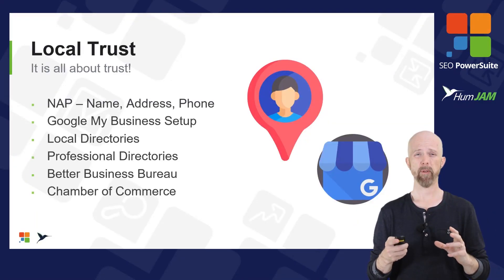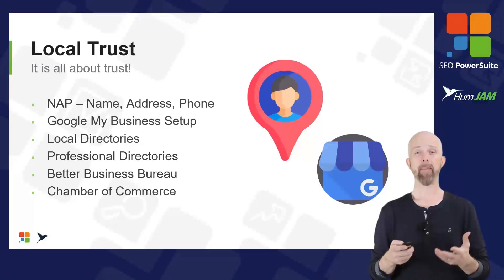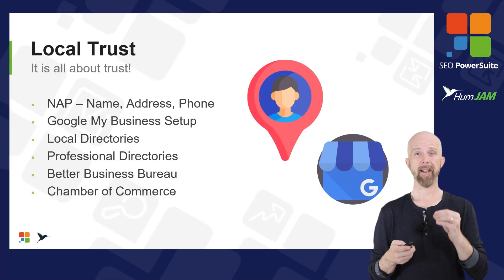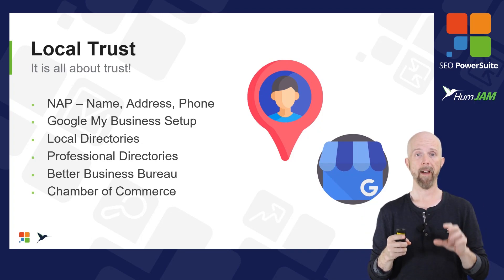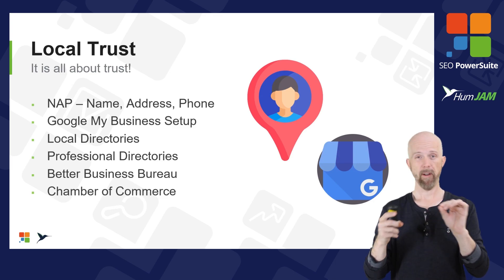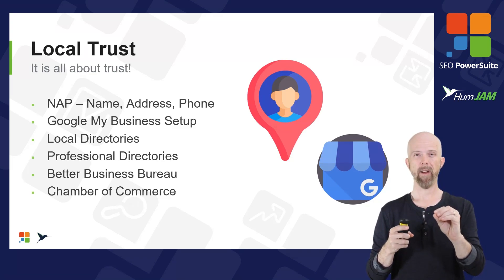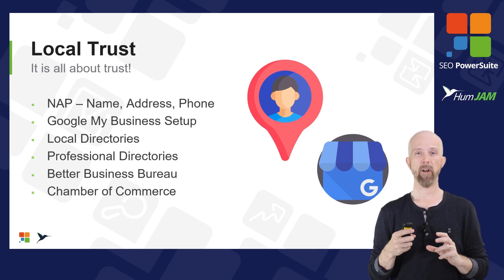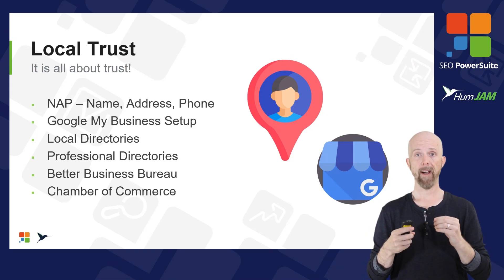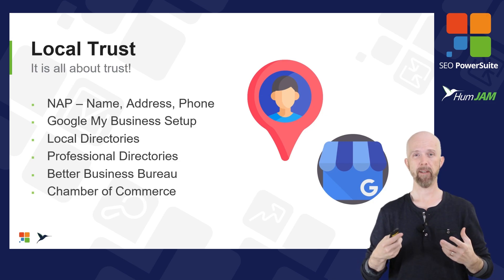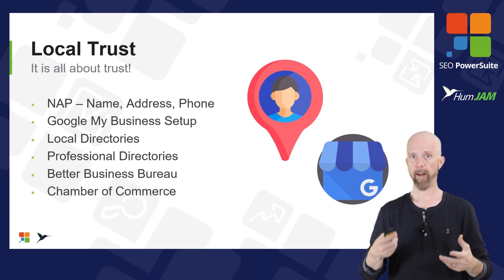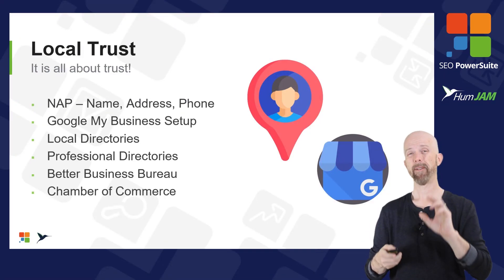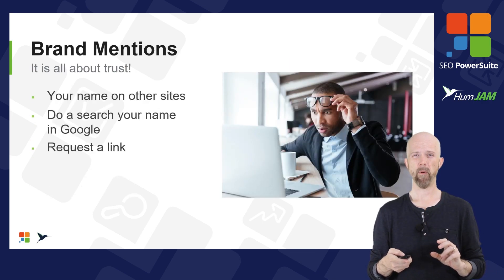Local trust is super important if you're a local business, from an authority and trust perspective. The big acronym here is NAP — Name, Address, Phone Number. It needs to be consistent and located in prominent places all over the web. Google My Business setup needs to be done if you haven't done it, and as an SEO that's a service we can also provide for businesses.